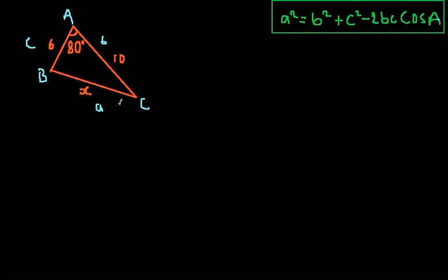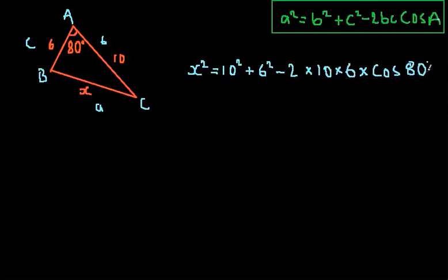So, a² is going to be our x² here, equals. So, our b is 10 squared. Sorry about the noise in the background. And c is 6 squared, minus 2 times by b, which is 10, times by c, which is 6. And then times by, here we have cos, cos of A, which is 80 degrees.